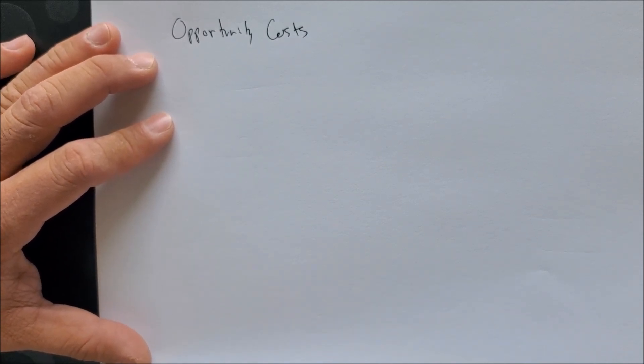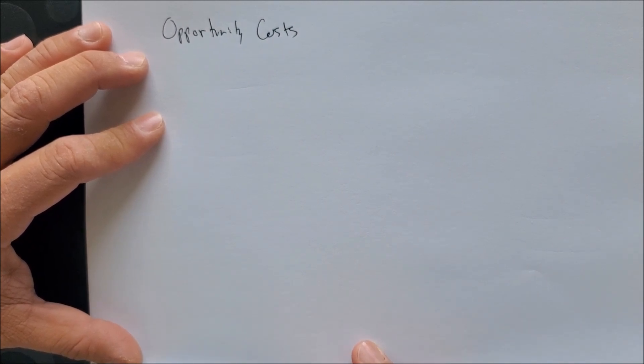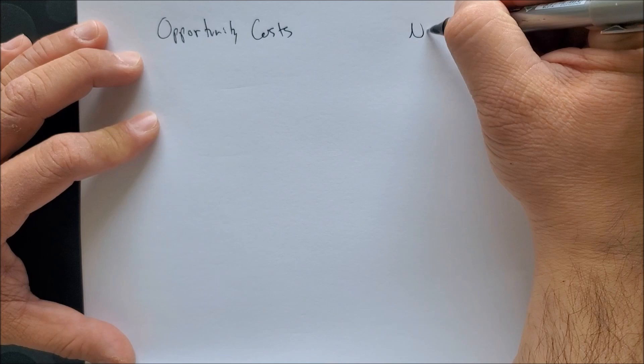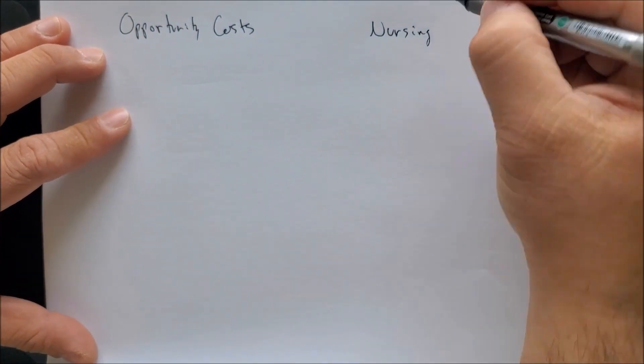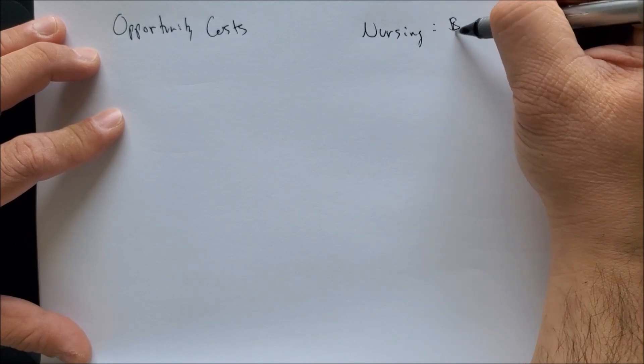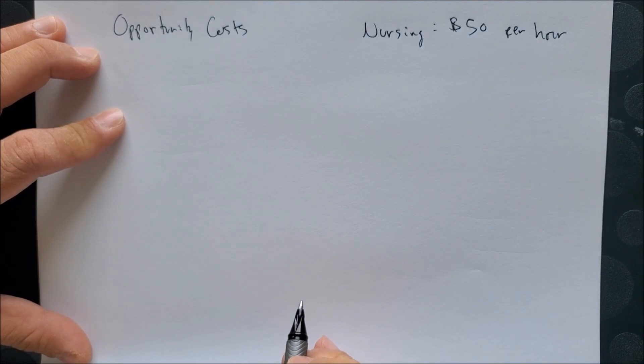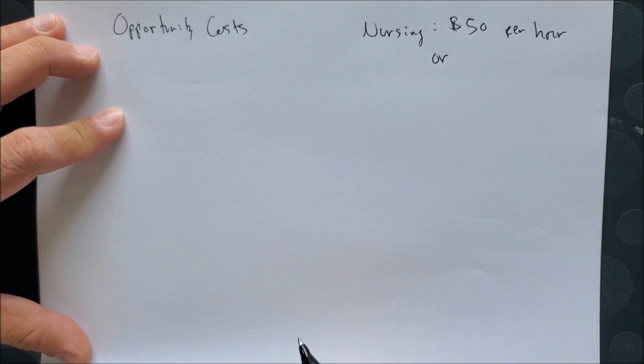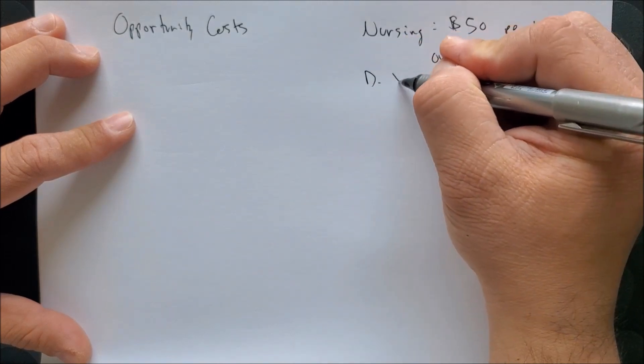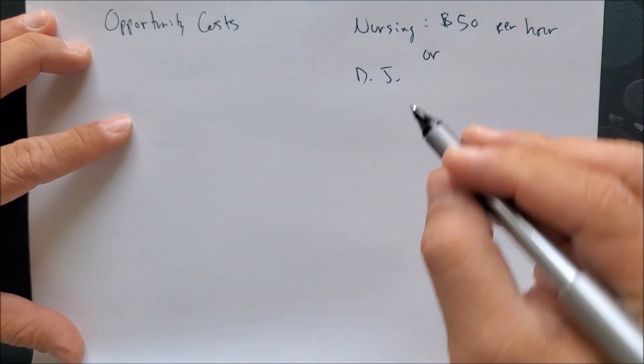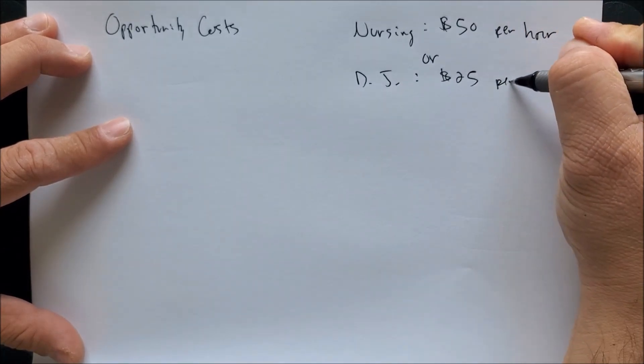Let's look at occupation. Let's say you have the choice between two types of occupations. One we can call nursing. Nurses today can make up to $50 per hour. Or you have another occupation where you could look at being a DJ. DJs can make $25 per hour.